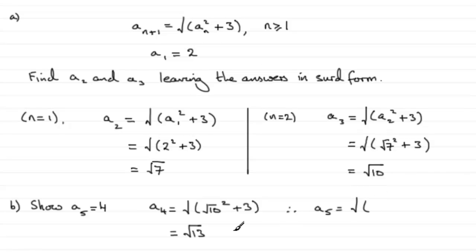Well, A4 was root 13, so we've got root 13, and we're going to square that, and then plus the 3. Well, root 13 squared is 13, 13 plus 3 is 16, so we've got that A5 equals the root of 16, which is simply 4.